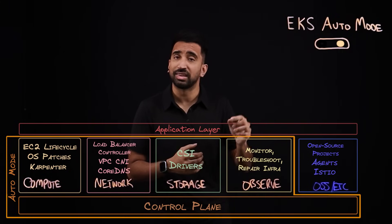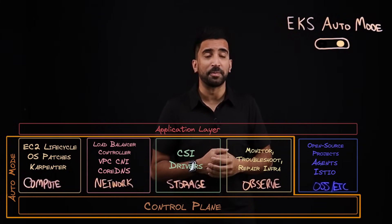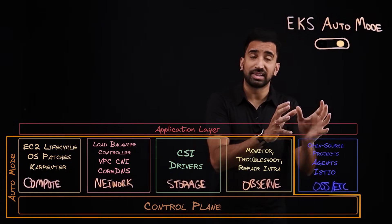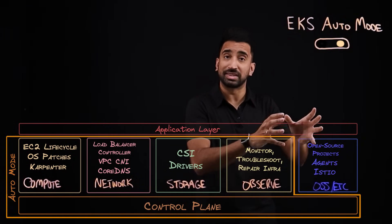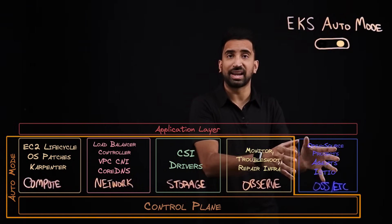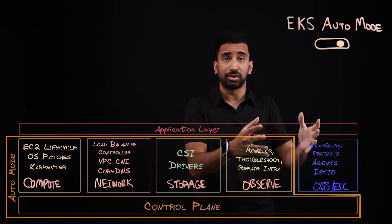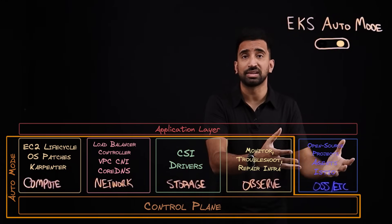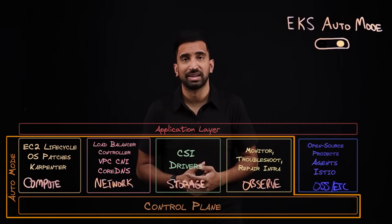Please leave your feedback in the comments below. This last bucket — shown in a different color — continues to be supported on Amazon EKS. With Auto Mode, it's still Kubernetes conformant, and you'll continue to manage these as you would with any Kubernetes environment.